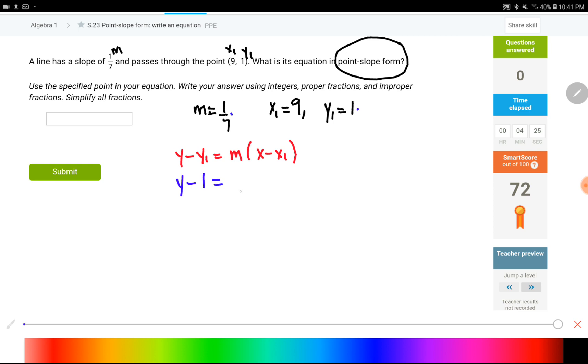X1 is a positive number, so I just bring it down over here. That would be my final answer for this question. Y minus 1 equals 1 over 7 times x minus 9.